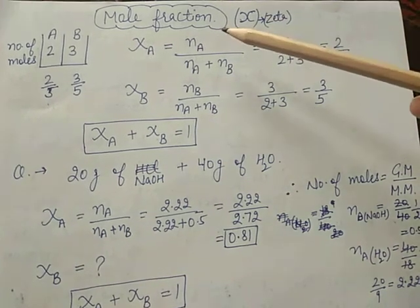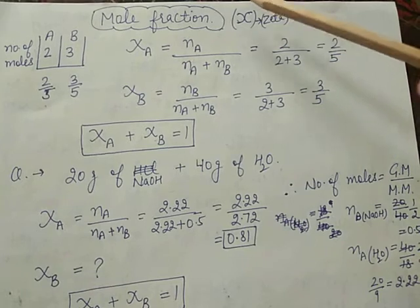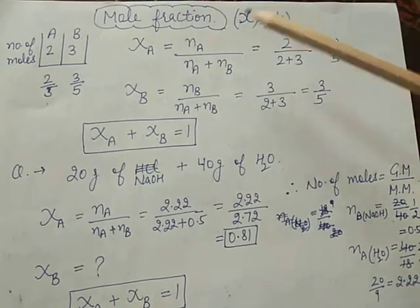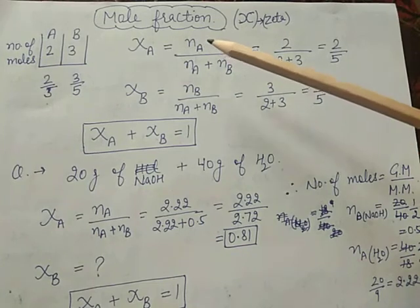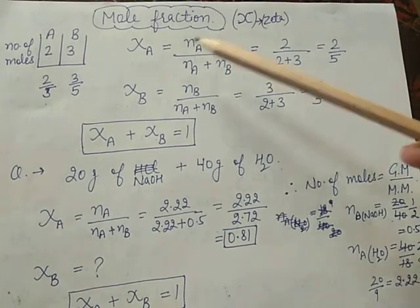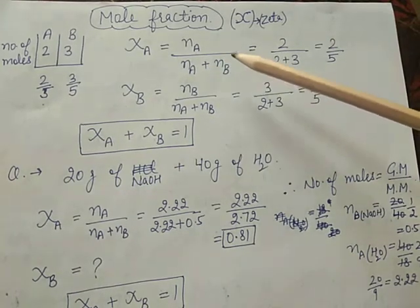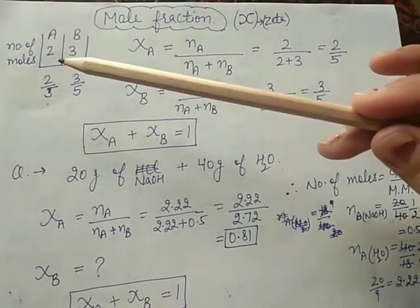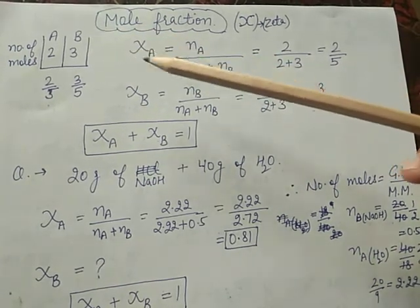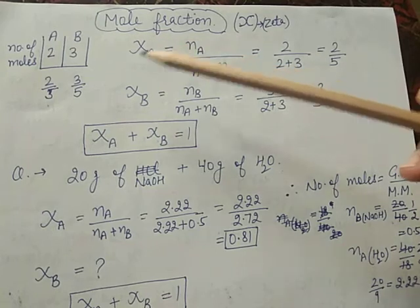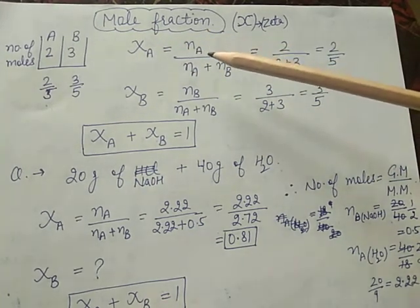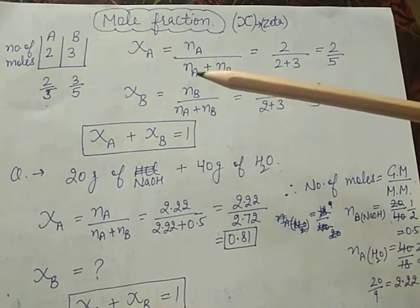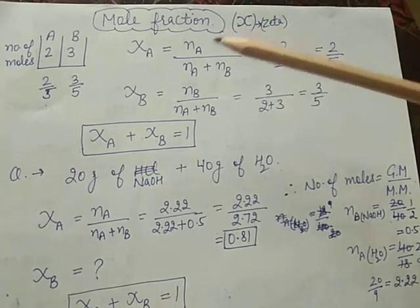Good morning students. Today's topic is mole fraction. Mole fraction is denoted by zeta. Mole fraction means the ratio of number of moles of one component to the total number of moles of all the components present in the solution. Suppose there are two components A and B — A having two moles, B having three moles.